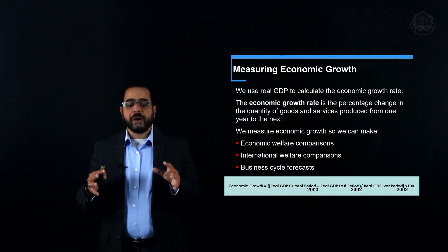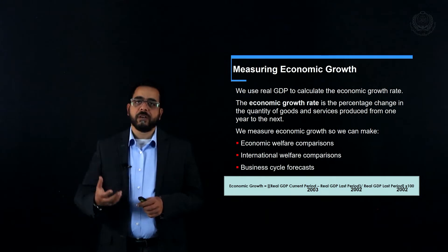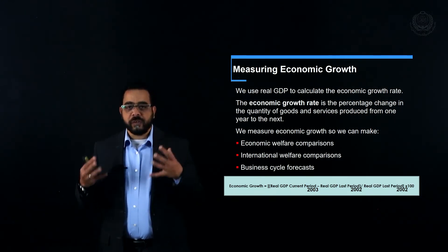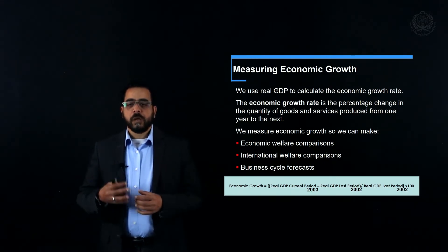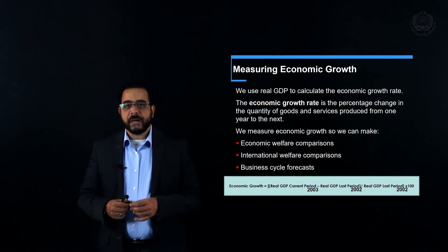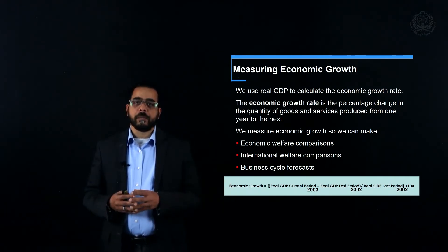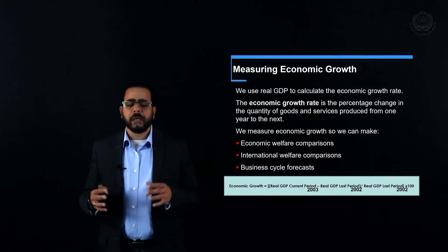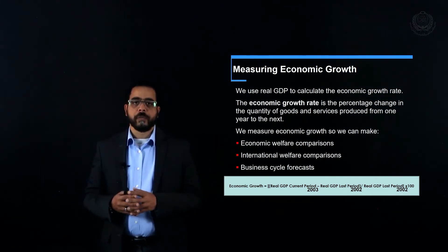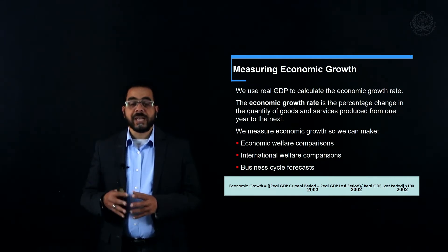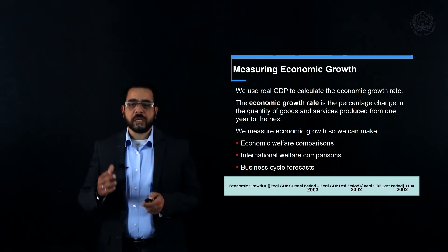GDP and economic growth are very important economic indicators used for different purposes. We can use them to make a welfare comparison — did our standards of living improve through the years? We can use them for international welfare comparison, to compare the economic performance of different countries. And we can use them for business cycle forecasting.